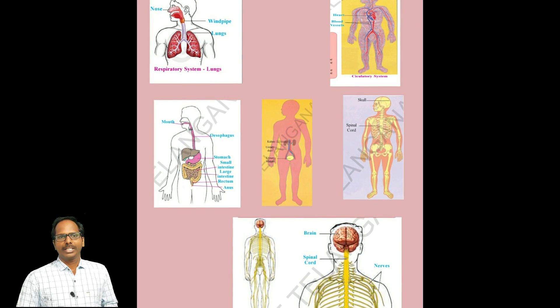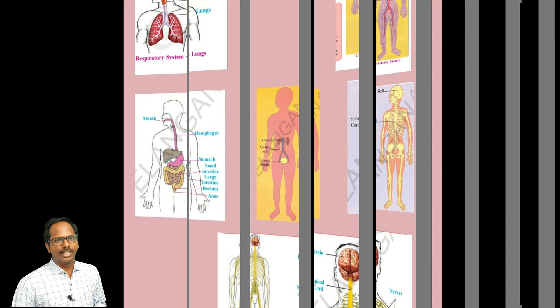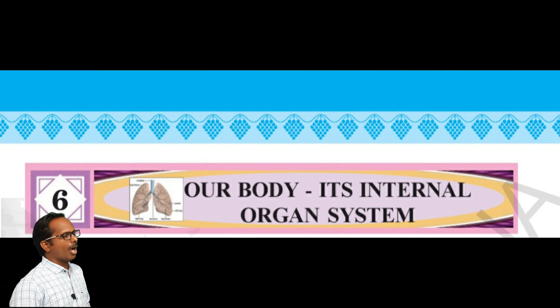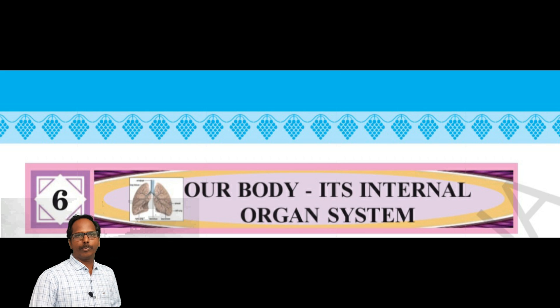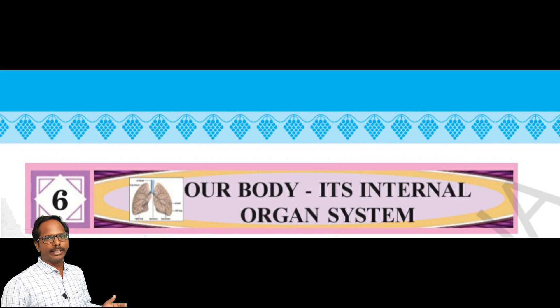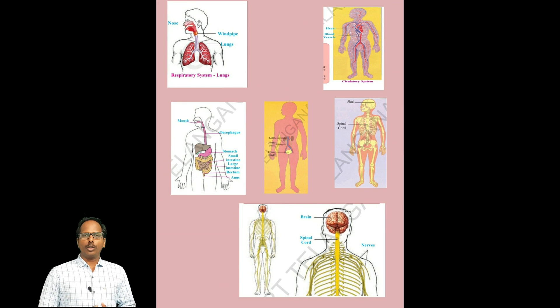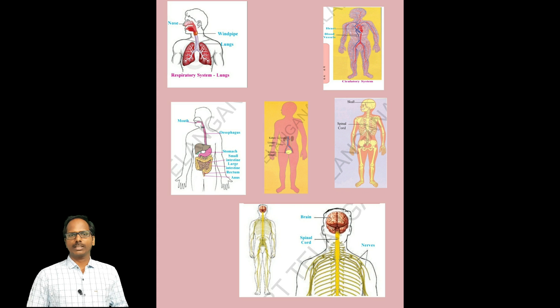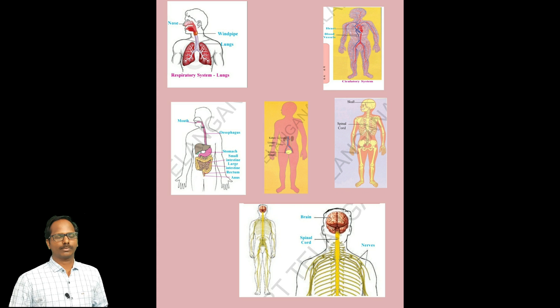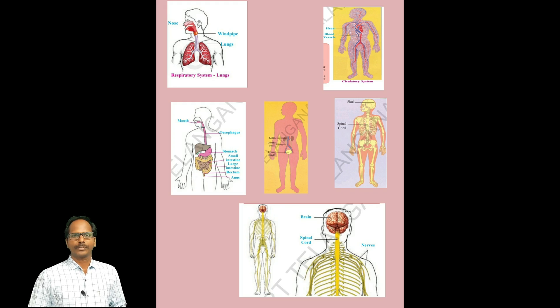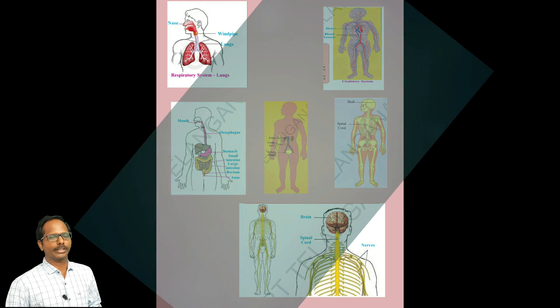Children, in today's class, we are ready to learn the lesson named 'Our Body Internal Organ Systems,' Fifth Class, EBS. In our body, in total, we have six organ systems. Let us see what they are.